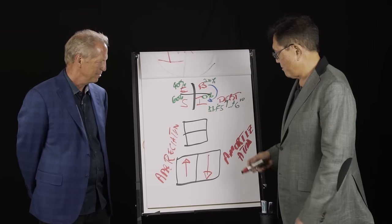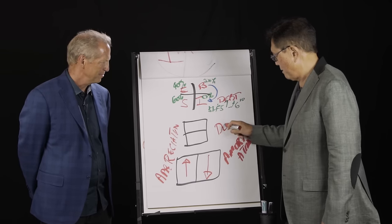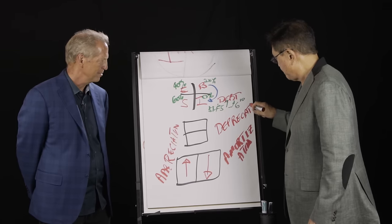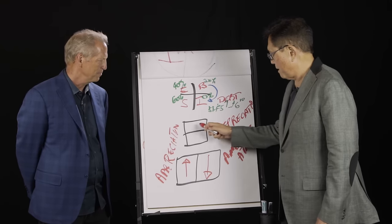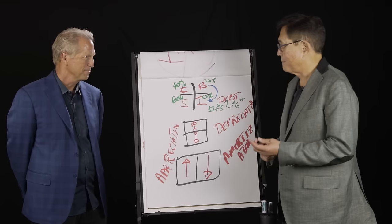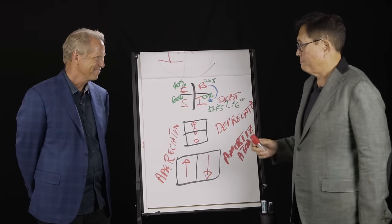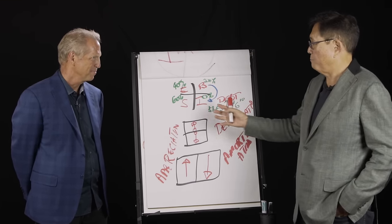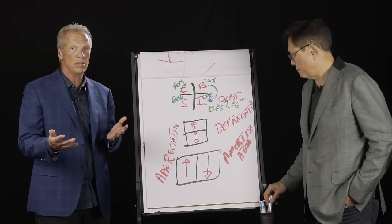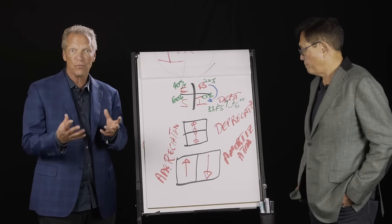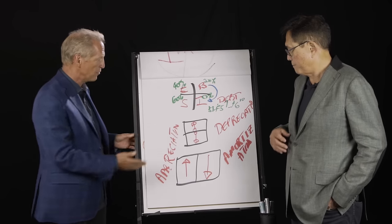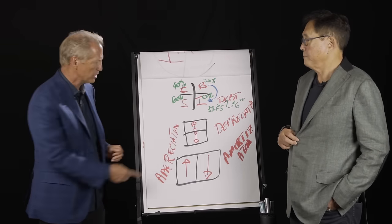And then we have the third word. So you've got amortization, appreciation. And this is the magic word here that most people don't understand. Depreciation. And this is where it gets tricky. Let's see. Why is that actually both sides?